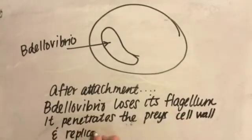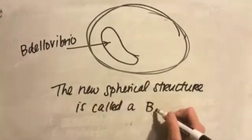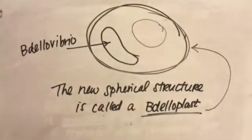It penetrates the host cell wall and replicates in the periplasmic space. The new spherical structure is called a bdelloplast.